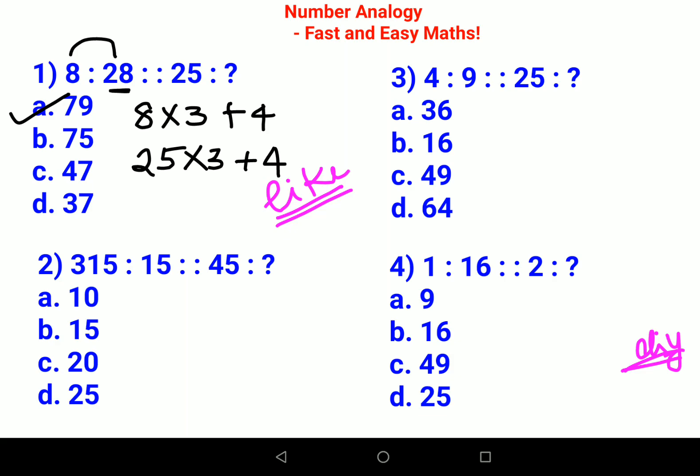Now over here this one looks a bit tricky because the number given over here is 315 and then which is equals to 15, or which is to 15, and then we need to find what 45 is to.